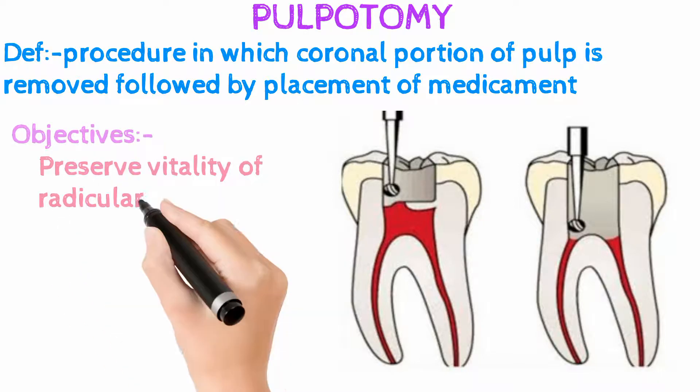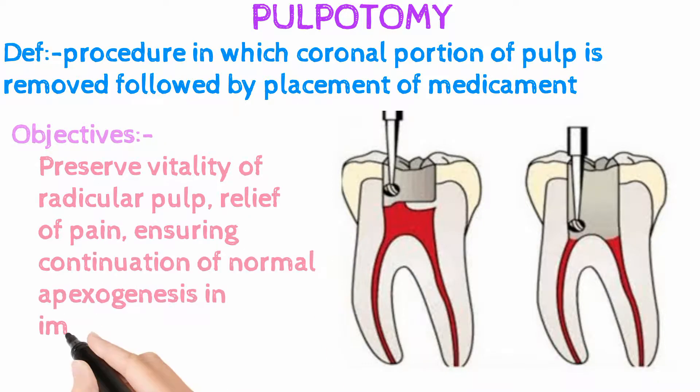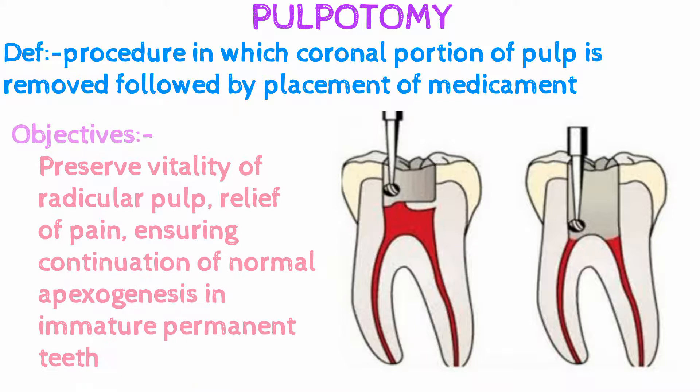The objectives for pulpotomy are to preserve the vitality of the radicular pulp, to provide relief of pain, and to ensure continuation of normal apexogenesis in immature permanent teeth.